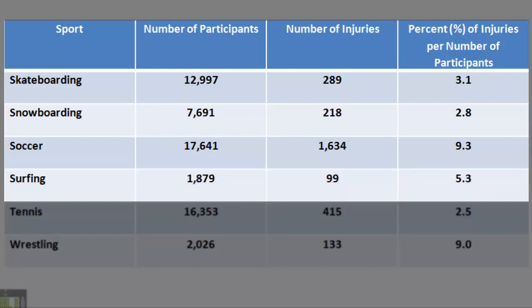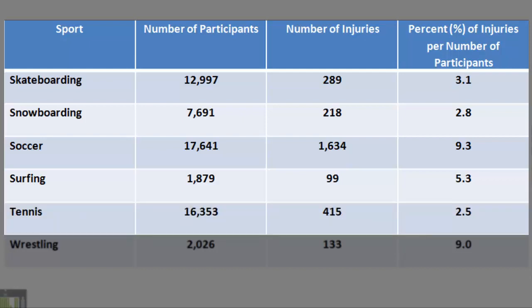Surfing. Number of participants: 1,879. Number of injuries: 99. Percent of injuries per number of participants: 5.3. Tennis. Number of participants: 16,353. Number of injuries: 415. Percent of injuries per number of participants: 2.5.